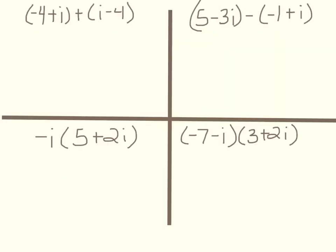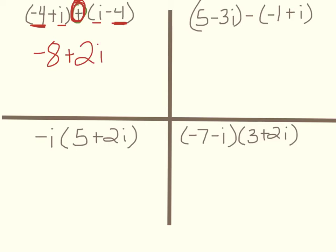Here are some operations examples with complex numbers. This first one is super easy — there's a plus here, and all you have to do is combine like terms. Every single time I put this on a test, somebody foils it, and you know better than that. We're just going to combine like terms. We do the real part first: negative 4 and negative 4 makes negative 8. And then we add the imaginary parts: i plus i is 2i. It's that easy.